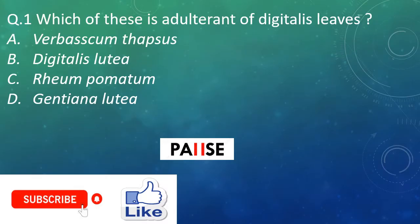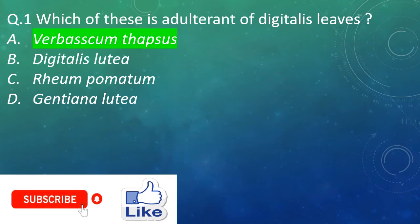Question one: Which of these is an alternate of Digitalis? Option A: Verbascum thapsus. Option B: Digitalis lutea. Option C: Rheum palmatum. Option D: Gentiana lutea. And the right answer is Option A: Verbascum thapsus.